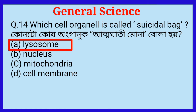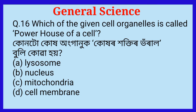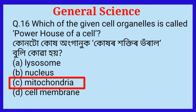Question number fifteen: Which of the following diseases is caused by deficiency of iron? Due to deficiency of iron, which disease occurs? The answer is option D, anemia. Question number sixteen: Which of the given cell organelles is called the powerhouse of a cell? The answer is option C, mitochondria.